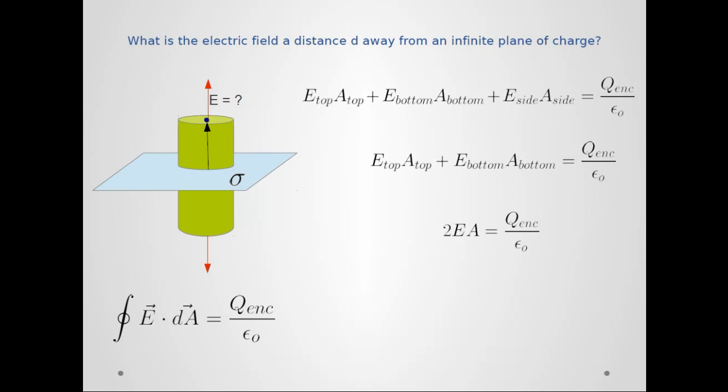The third thing I want to do is take a look at that charge. What is the Q_enc by my cylinder? How much charge is actually being pierced by that cylindrical surface? Well, it's just going to be the charge density σ times the area of a face of my cylinder. Now you can see that I can do a little bit of simple math, rearrange everything, and I get E = σ/(2ε₀).